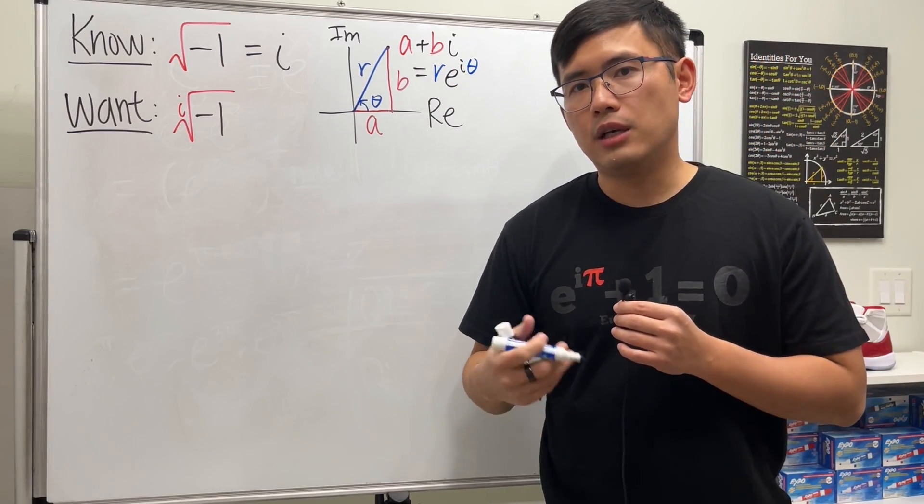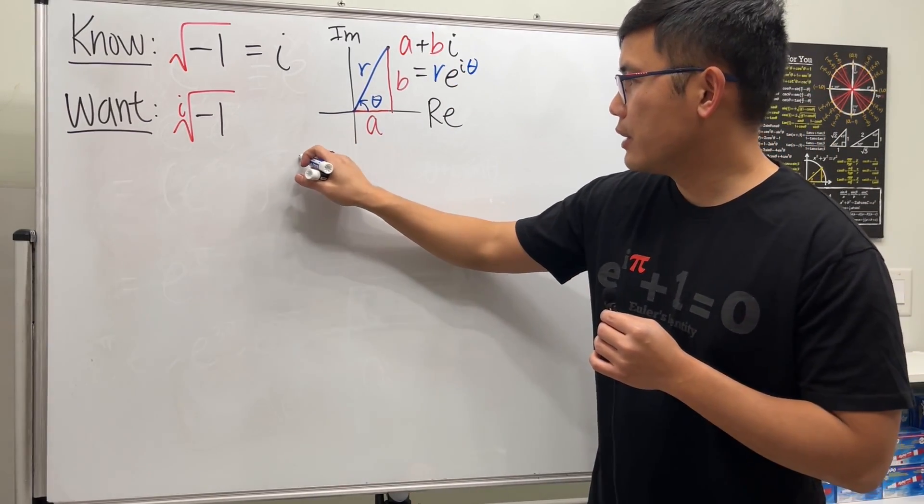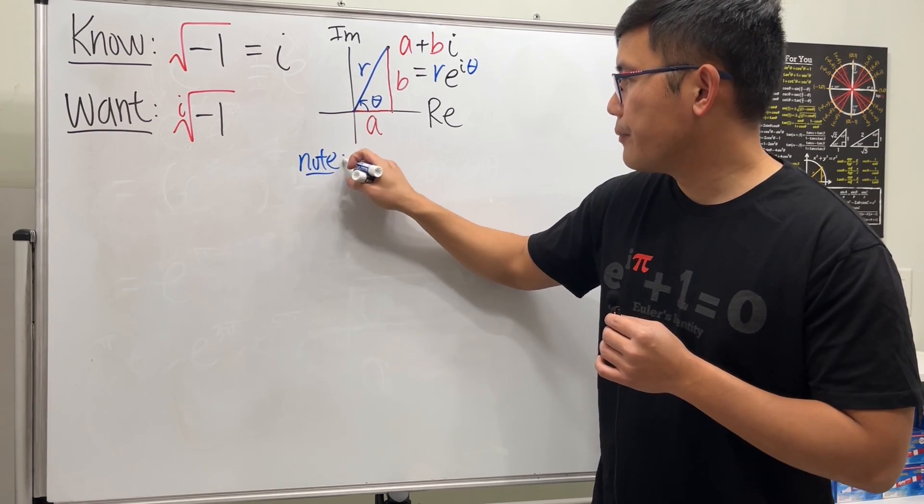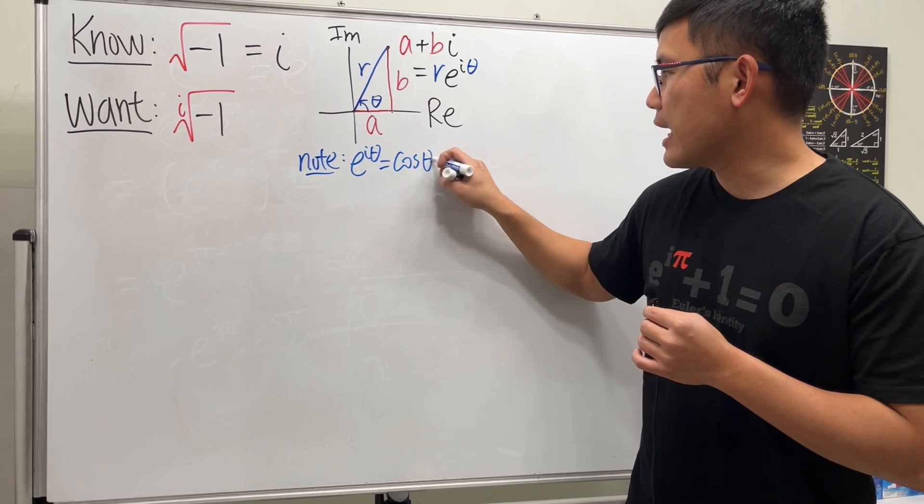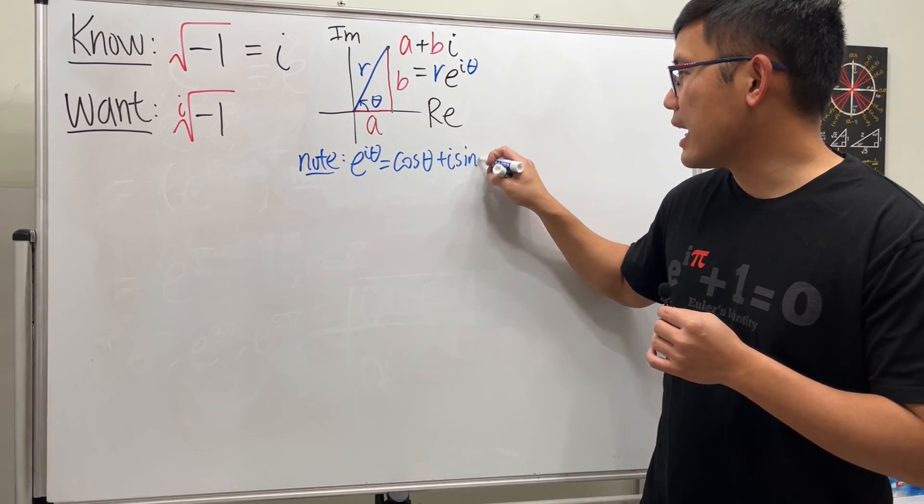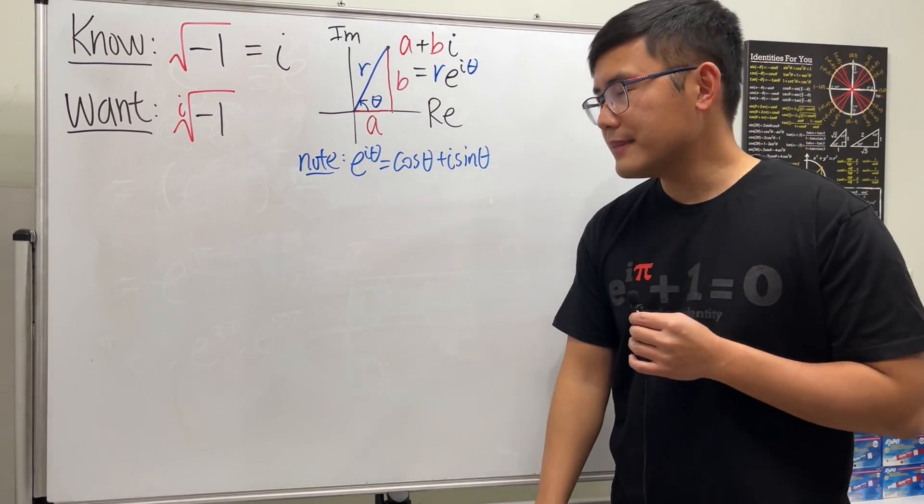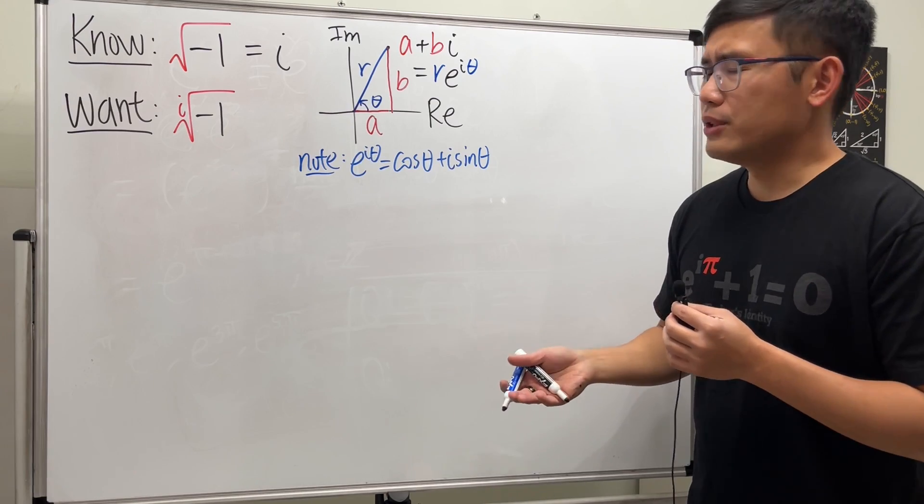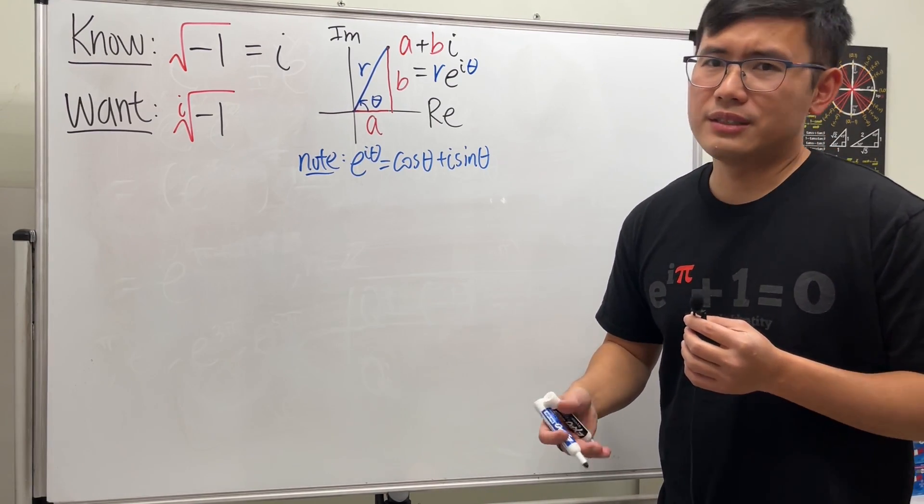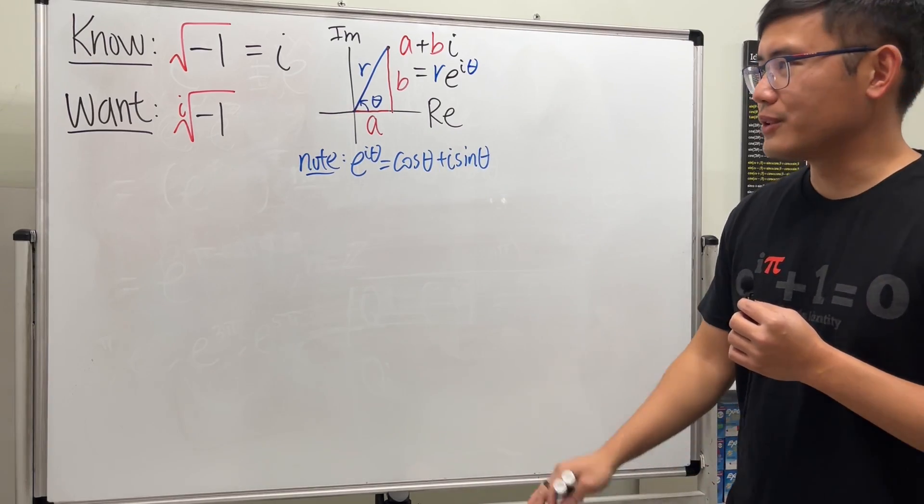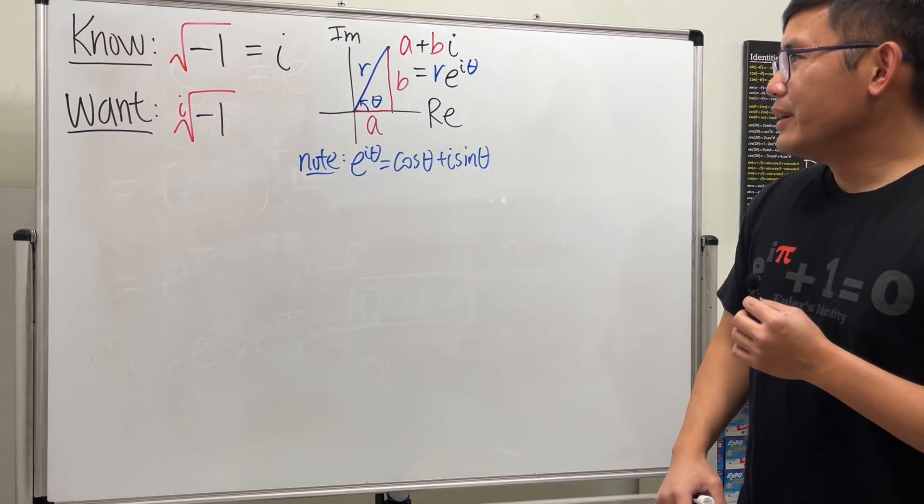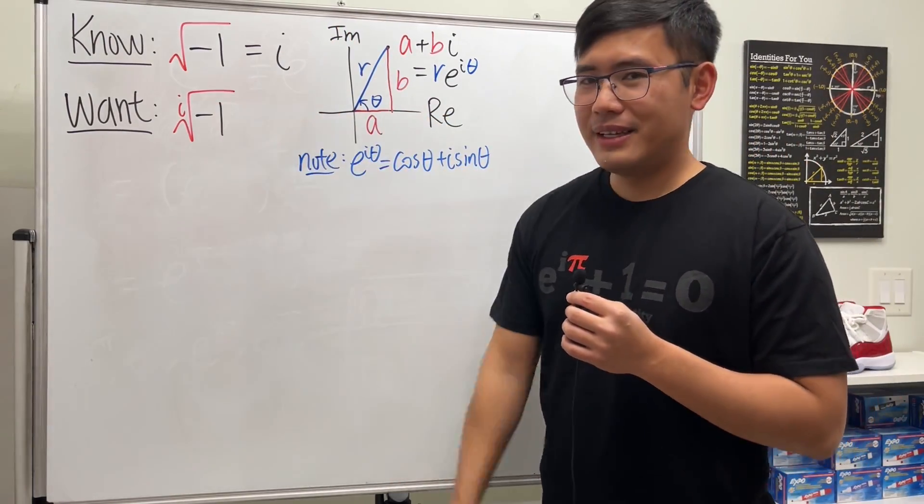To make sense of e to the i theta, we will have to utilize Euler's formula. So here's the deal: note that e to the i theta is equal to cosine theta plus i sine theta. This should also remind you of the polar coordinate that you've done back in pre-cal or cal 2. Now it's just a complex version of that.